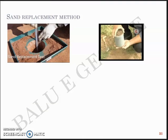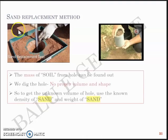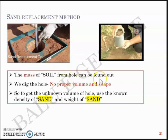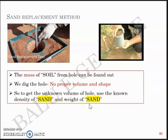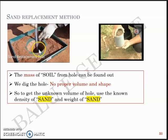The key difference between the core cutter method and the sand replacement method is this: in the sand replacement method, the mass of the soil dug out is found easily, but the hole has no regular shape or volume. To get the unknown volume of the hole, you use the known density of the sand and the weight of the sand. In the core cutter method it was simple — the core cutter had a proper volume. But here, since the hole is irregular, you use sand to find the exact volume.